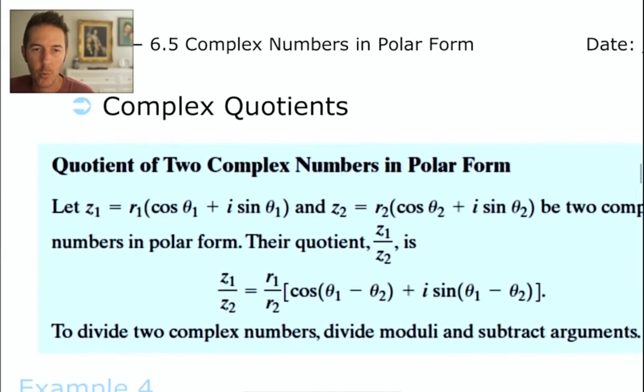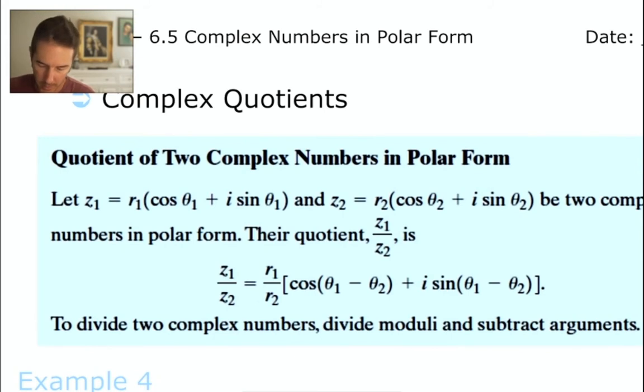What about a complex quotient? What about here where I am taking z1 and dividing it by z2? It complements very well the product that we just looked at. This time the radii will be divided, r1 over r2, and we need to be subtracting our theta values. So let's do that.